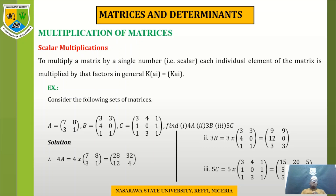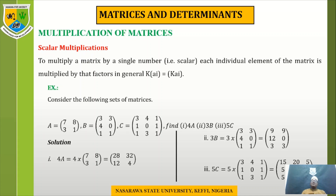The next topic is multiplication of a matrix, starting with scalar multiplication. A scalar is a single number that multiplies an entire matrix. When you pick a number and multiply a general matrix by it, that number is called a scalar. Each individual element of the matrix is multiplied by the scalar factor k.